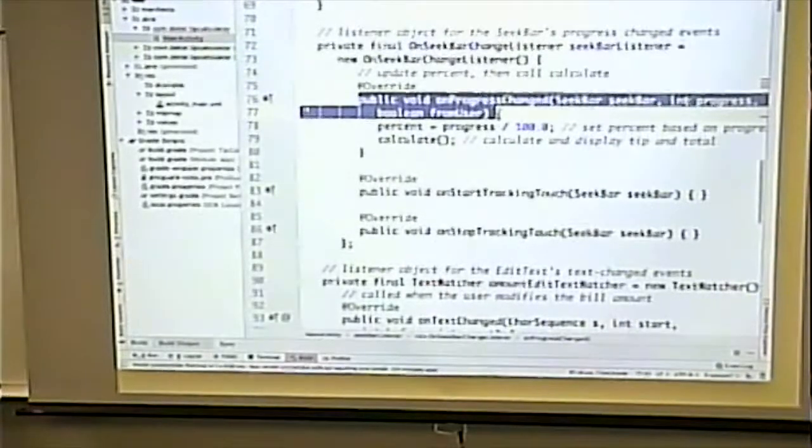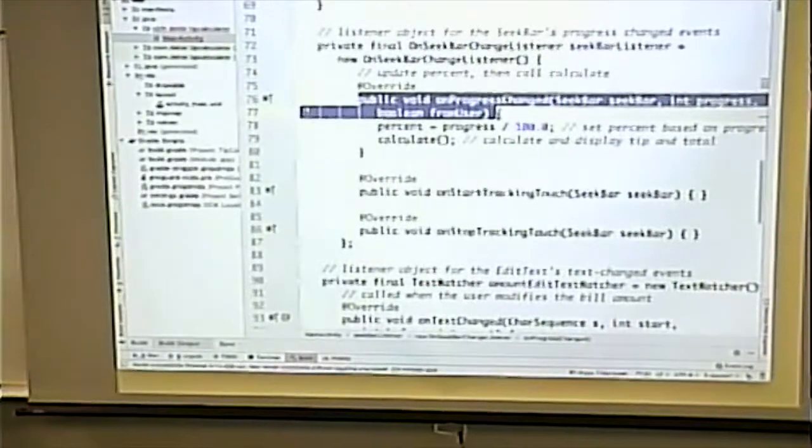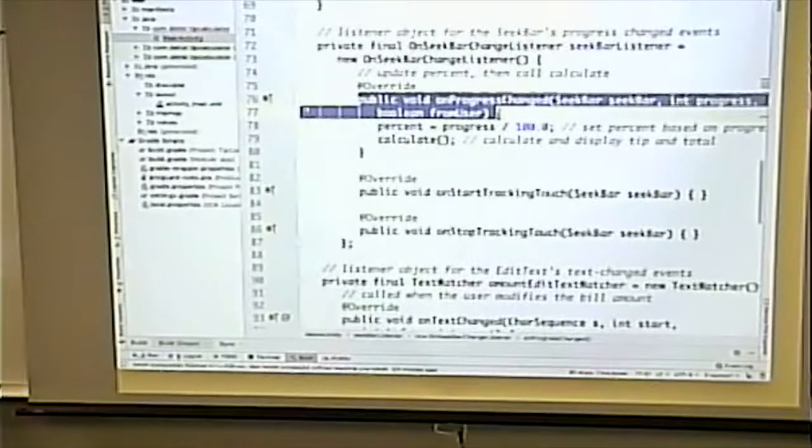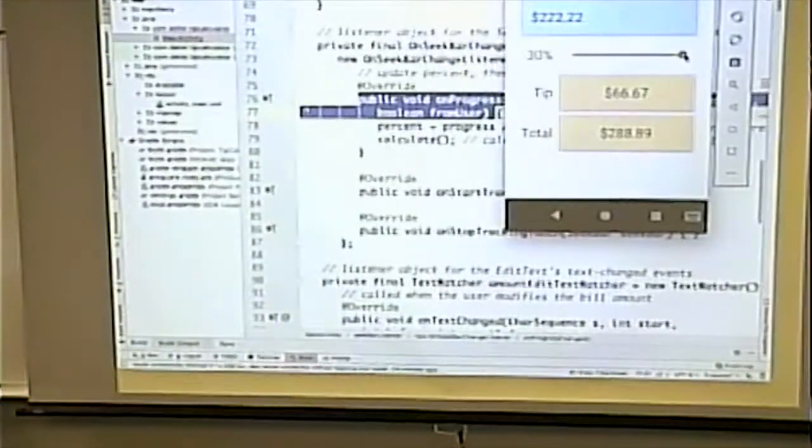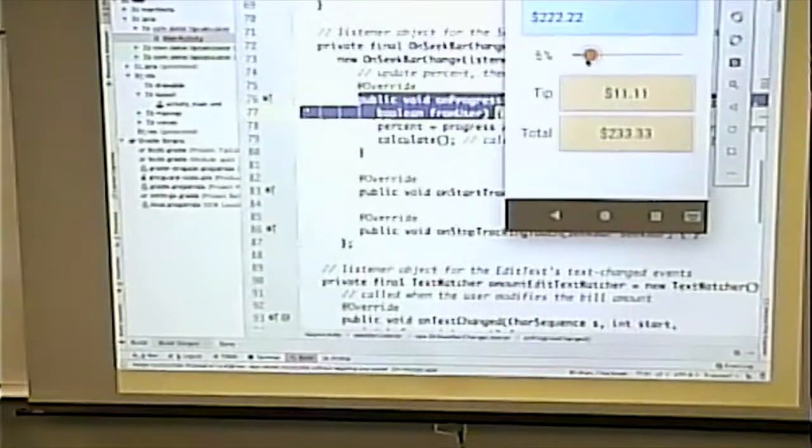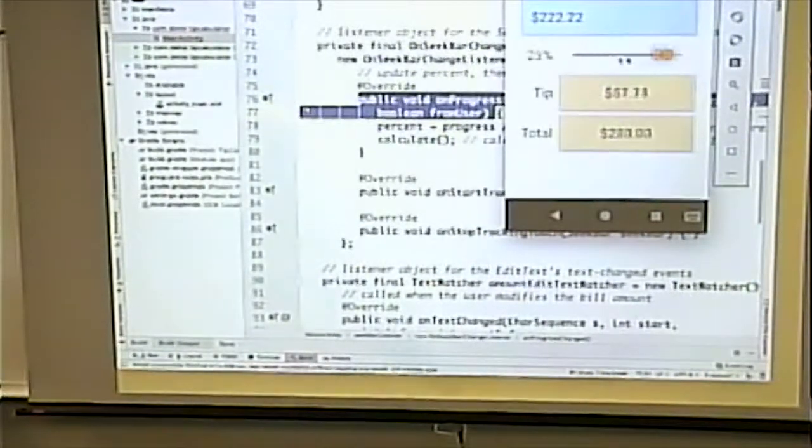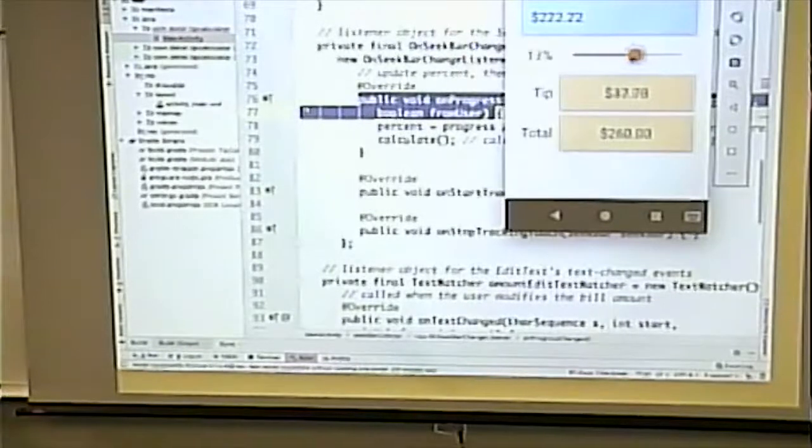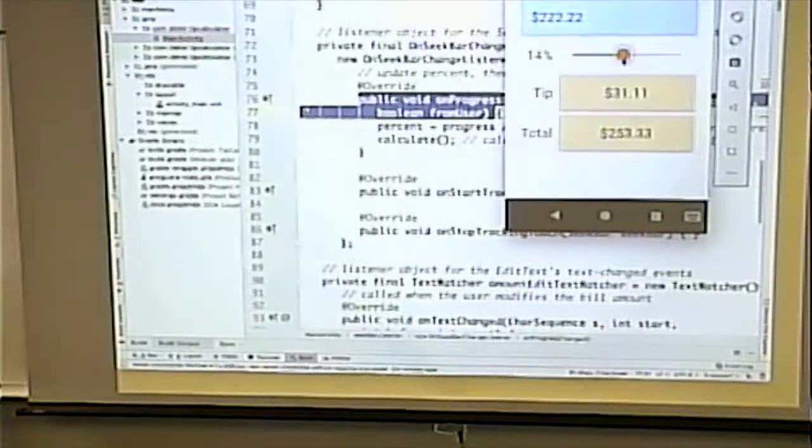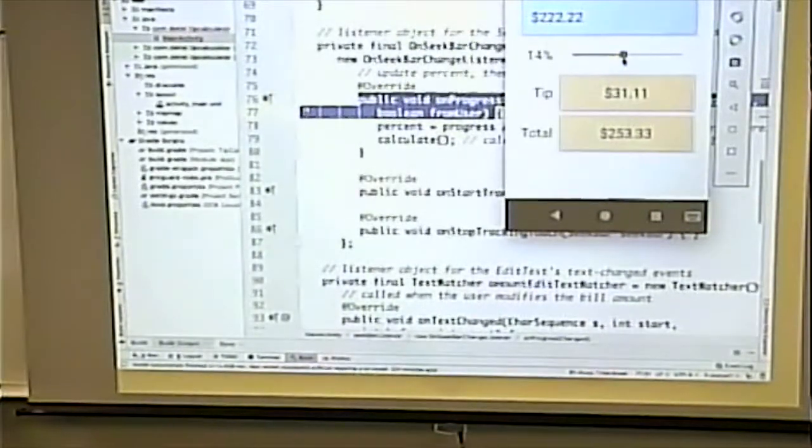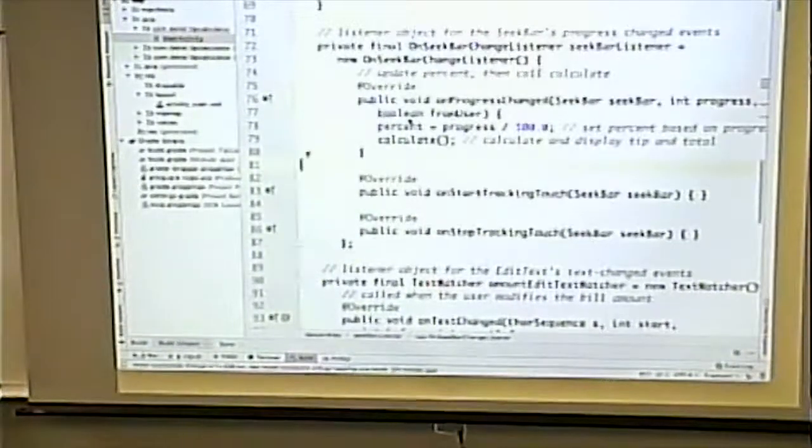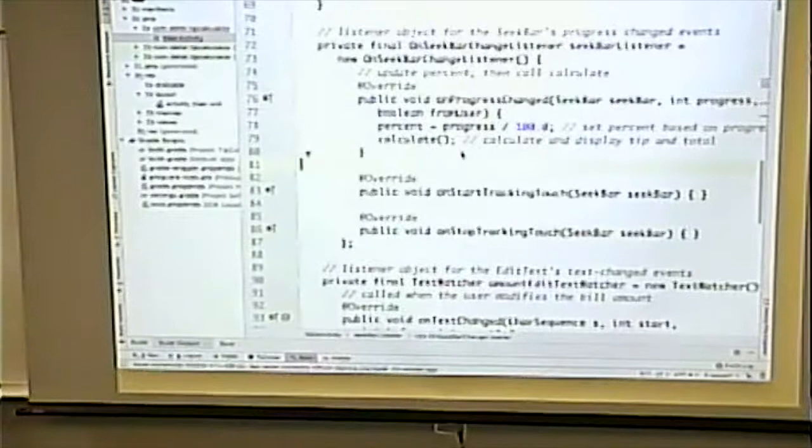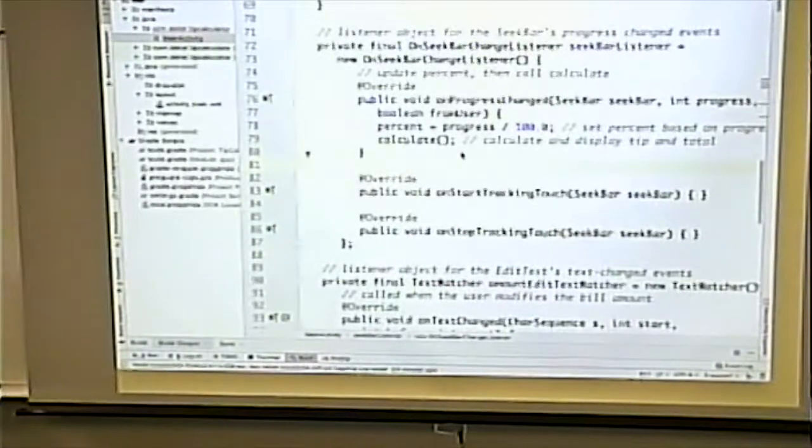Automatically when I move that seek bar and I change the value, this gets called. So even if I'm not done changing it, as the value changes, as I move it, as the value changes. That changes and calculates. So every time the value changes that seek bar, this method gets called. Look to see what this does. This method gets past three arguments.